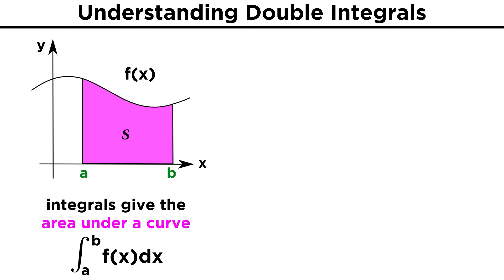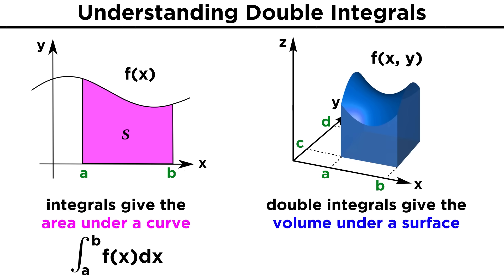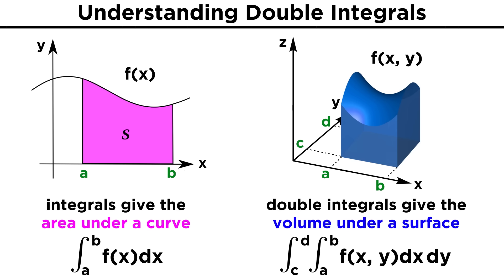Now let's add a dimension. We can think of double integrals as giving the volume beneath a surface given by the function f. We are now integrating over two variables, x and y, so for each variable we have an integration sign, and to indicate the variables involved we have dx and dy.